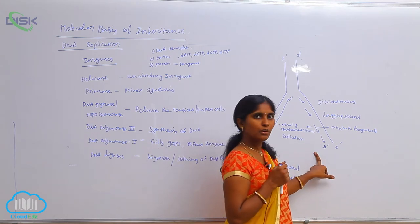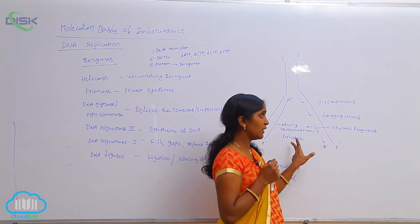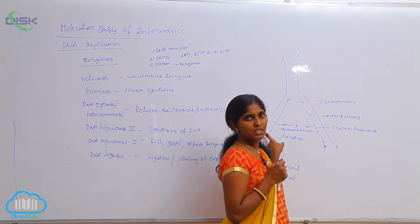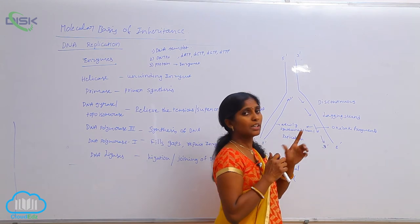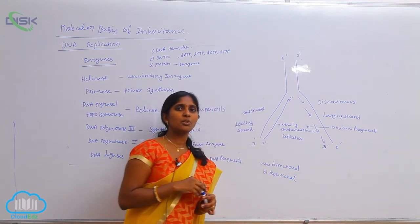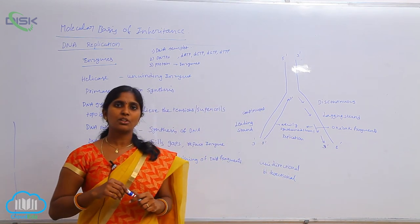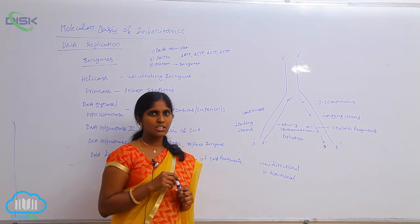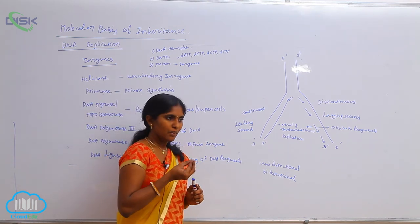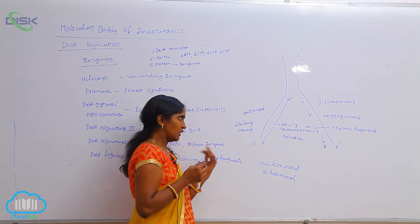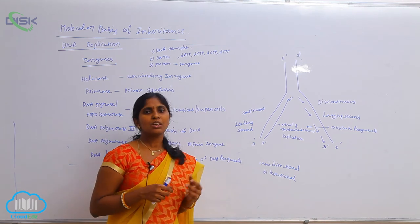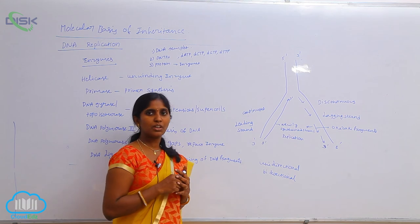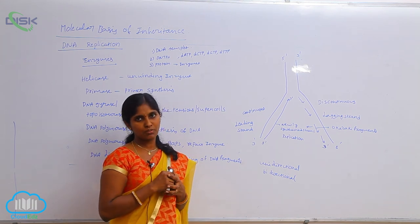Two different modes of replication are going on: one is continuous and another is discontinuous. Continuous and discontinuous modes occur because of insufficient enzymes — the required or insufficient enzymes lead to sometimes continuous and sometimes discontinuous mode of replication.